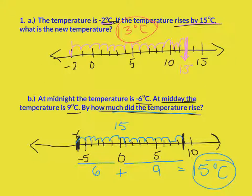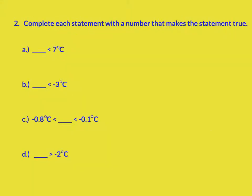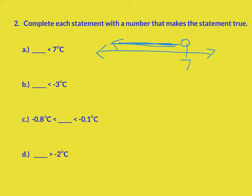Now we're moving on to the next problem: complete each statement with a number that makes the statement true. I need to write a number that's less than 7. If I place my 7 here on the number line, it is positive, and I can have anything going in the left direction — but I can't include 7. So 6, 5, 4, 3, 2, 1, 0, negative 1, negative 2, etc. I personally would choose a negative number because then you're sure it's smaller.